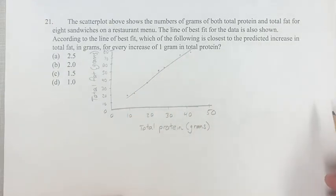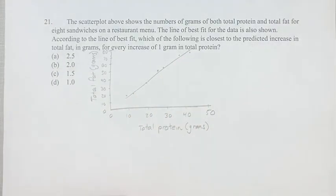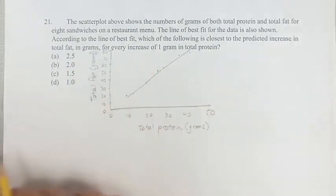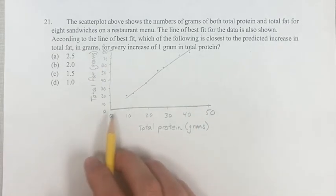We're given the line of best fit for this data and we're asked according to the line of best fit which of the following is closest to the predicted increase in total fat, which is your y value, for every increase in total protein, which is your x value.